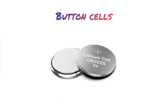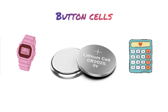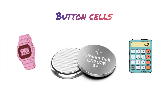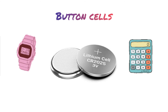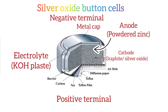Button cells are much smaller in size compared to alkaline batteries, and are made for small portable electronic devices that need small electrical power, such as wrist watches and pocket calculators. However, they produce the same amount of voltage as alkaline batteries, and in some cases button cells generate much higher voltages. The anode and electrolyte in these batteries are the same as alkaline batteries — they also use zinc as the anode and potassium hydroxide as the electrolyte.